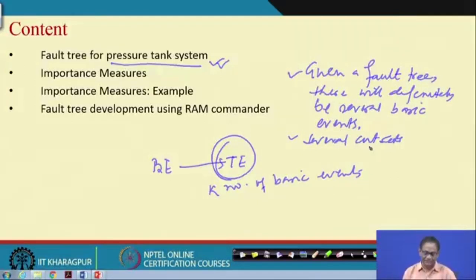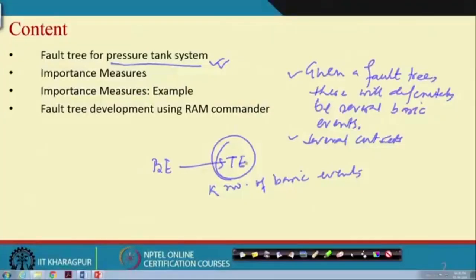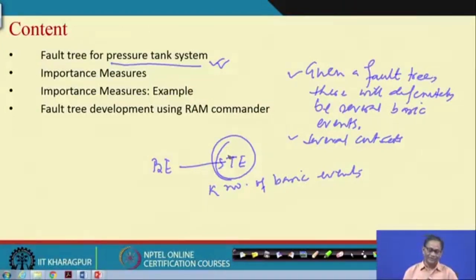This is basically what talks about importance. If we know the importance, we will take necessary care, and it also gives us the opportunity to rank the basic events in terms of occurrence of the top event. Then you will take necessary action according to the rank of their contribution — the one contributing the maximum to the top event occurring, you put a barrier so that failure will not take place.